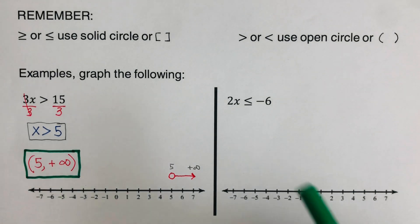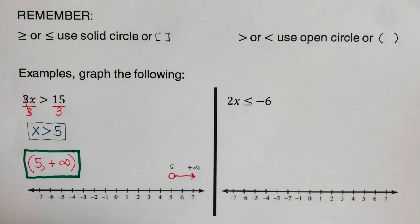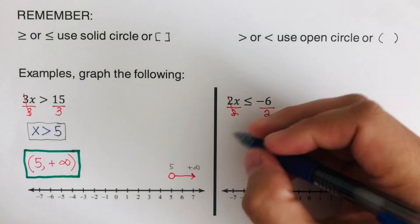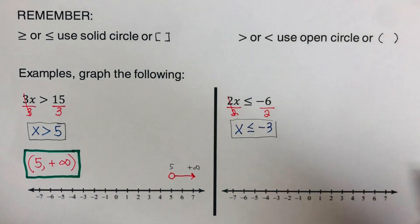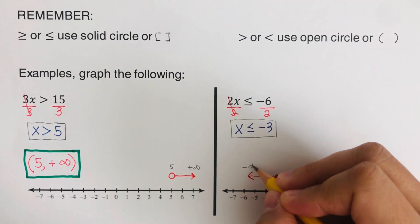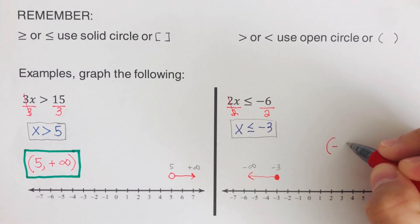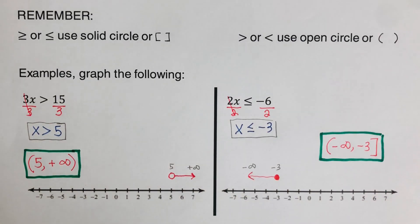Pause the video and try the next problem on your own. For 2x ≤ -6, we divide both sides by 2, giving x ≤ -3. We use a closed circle on negative 3 since there's a bar underneath, and the arrow is directed to the left. In interval notation, the solution is (-∞, -3], using a bracket since it's a closed circle.